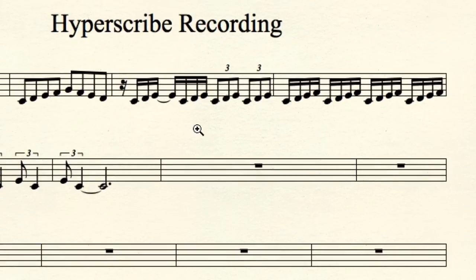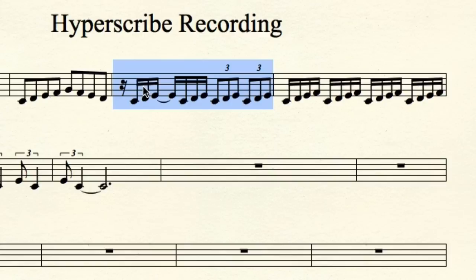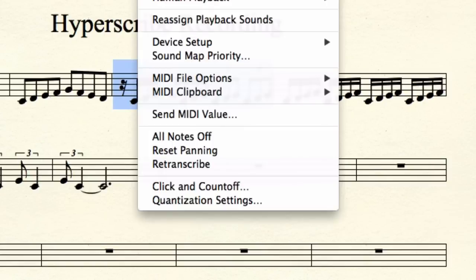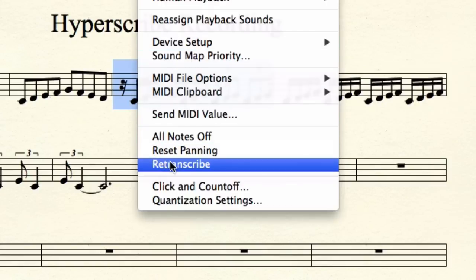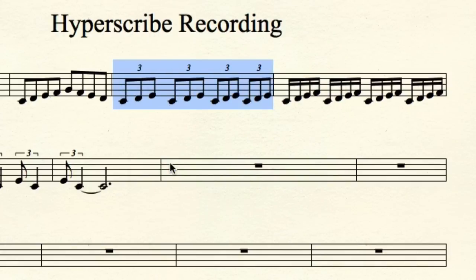I've got to select the selection tool — in Finale 2014 that would be Shift-Command-A; in earlier versions it was Escape. I select this measure, go up to MIDI Audio and select Re-Transcribe. Unfortunately there's no shortcut for that, so you have to pick it from the menu. And voilà — now I have all eighth note triplets.